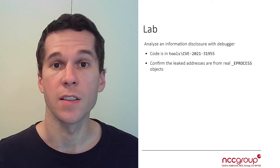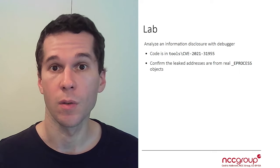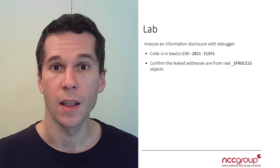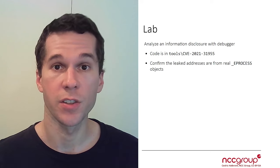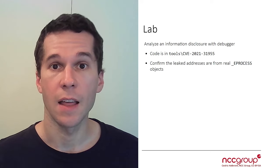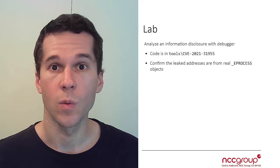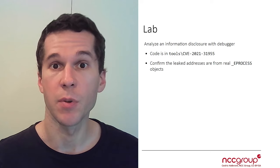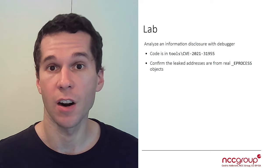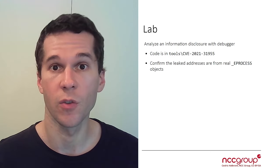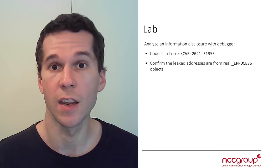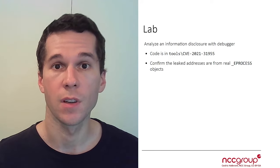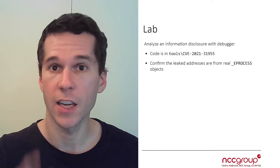We're going to run this executable — this exploit — on the actual VM. We're going to leak some eProcess structures, and then with WinDbg, we're going to make sure these eProcess structures are actually real structures and that we are really leaking some kernel pointers. Okay, now it's your turn.